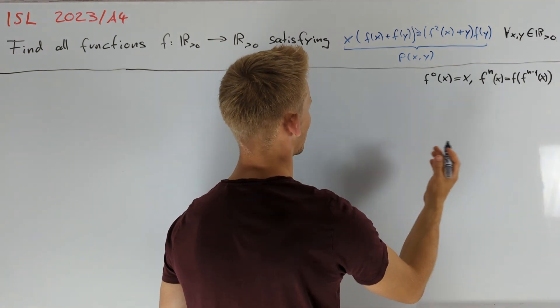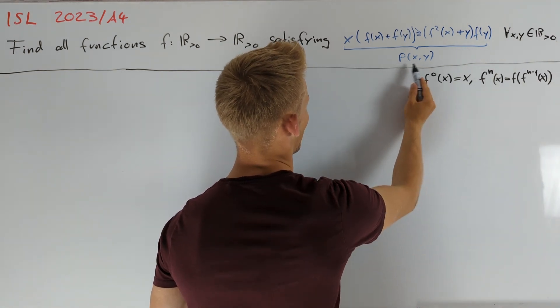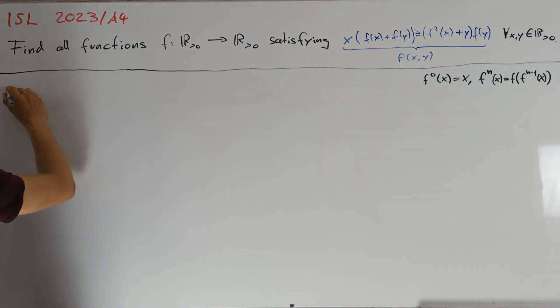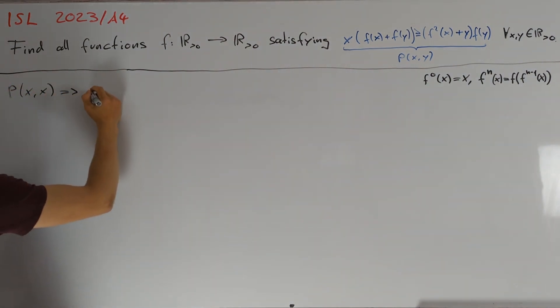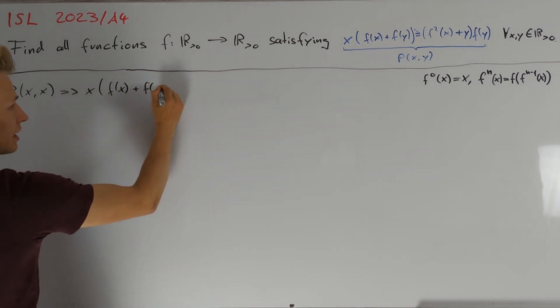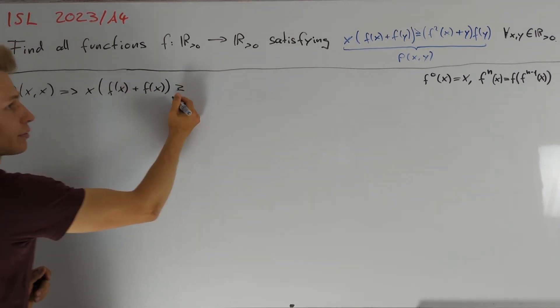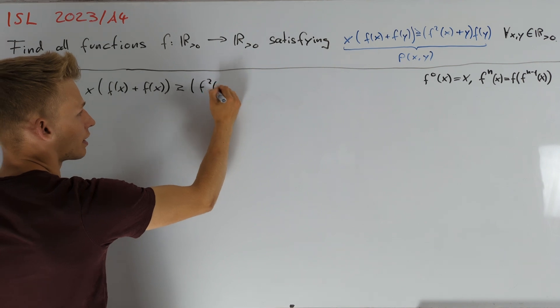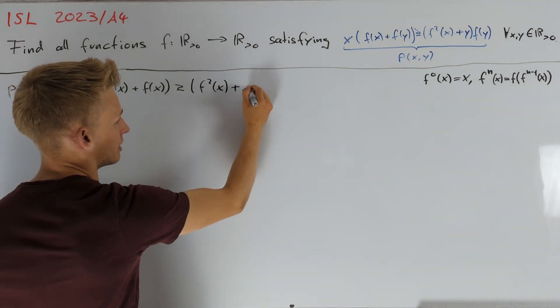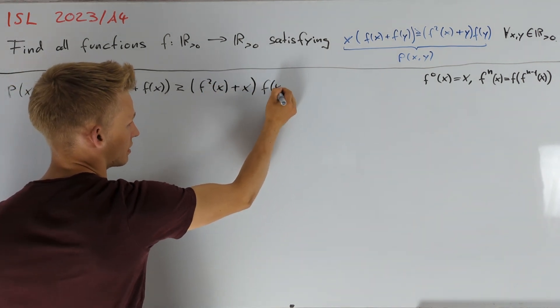When dealing with functional equations, a reasonable first step is to set both variables equal. So let's take a look at p(x,x), which tells us that x times f(2x) plus f(x) is greater than or equal to f²(2x) plus x times f(x).